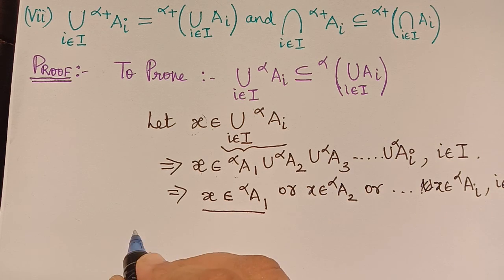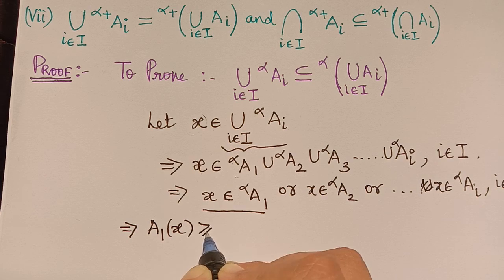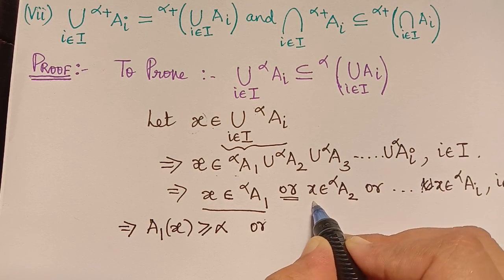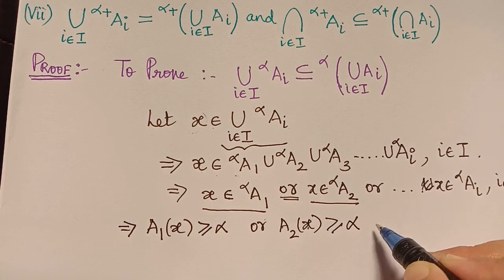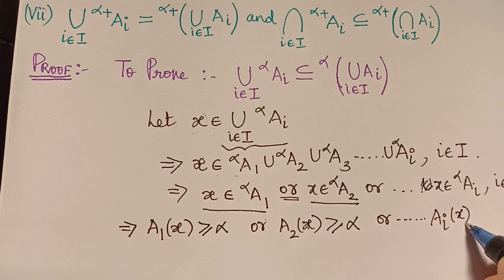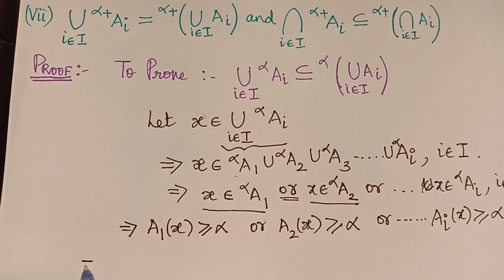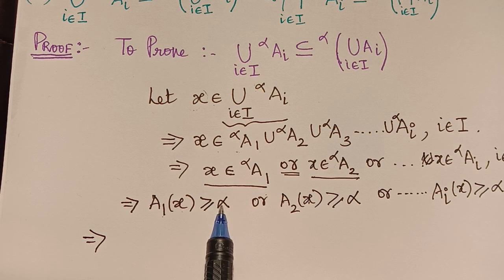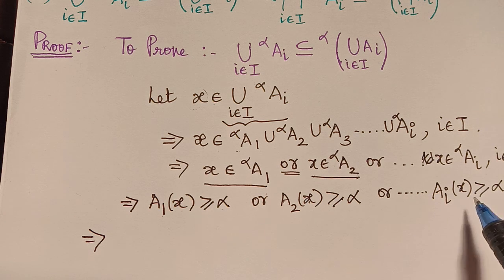From this, since x is an element of alpha cut of A_1, by the definition of the alpha cut set, the membership grade of x with respect to fuzzy set A_1 is greater than or equal to alpha. Similarly, A_2(x) ≥ alpha, or A_3(x) ≥ alpha, and so on — meaning A_i(x) ≥ alpha for some i in capital I.